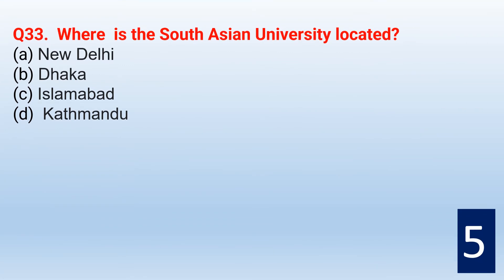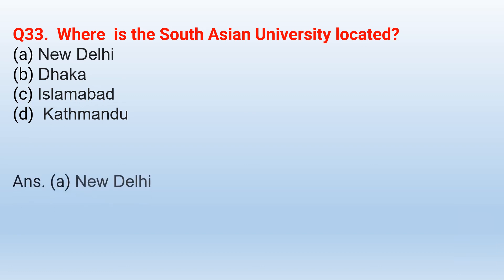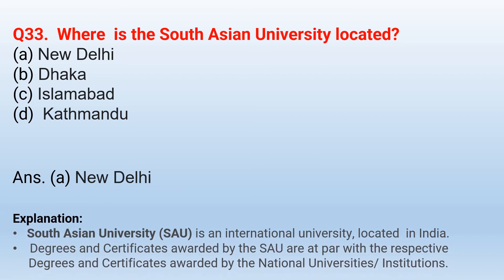Where is the South Asian University located? The correct option is New Delhi. South Asian University is an international university located in India. Degrees and certificates awarded by the South Asian University are at par with the respective degrees and certificates awarded by national universities and institutions.